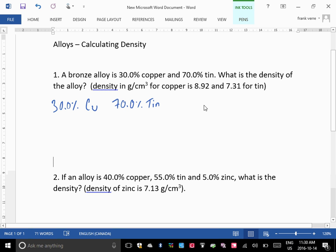The density of copper is 8.92. So we do something like this. We say, okay, the density of copper is 8.92 grams per centimeter cubed. And then we multiply that by 30%. Now, 30% as a decimal would be 0.3, right?